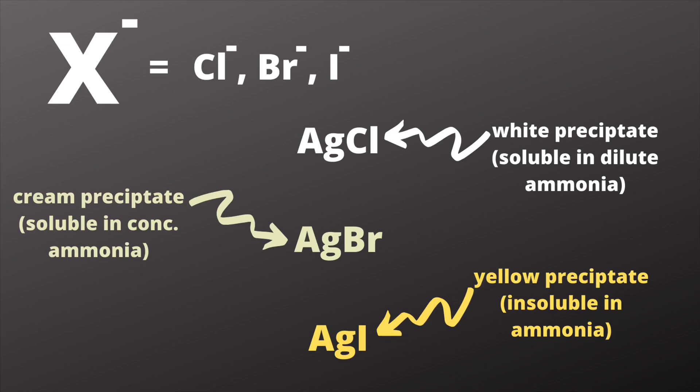Now the precipitates are insoluble in water and the precipitates themselves actually have individual colors. The three colors of our AgX precipitates are white, cream and yellow. You can think of the precipitate as darkening in color as you move down the group.